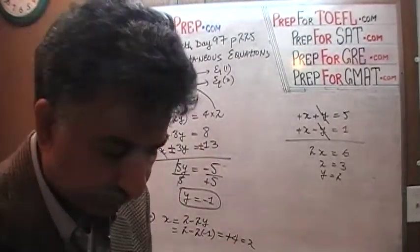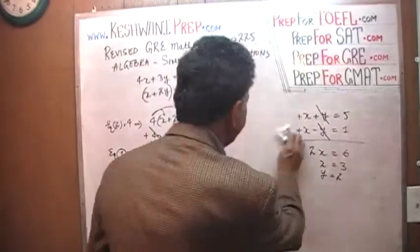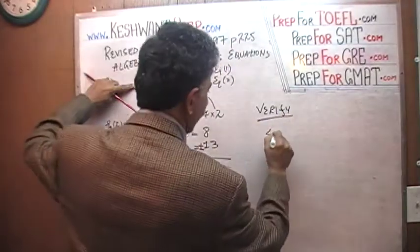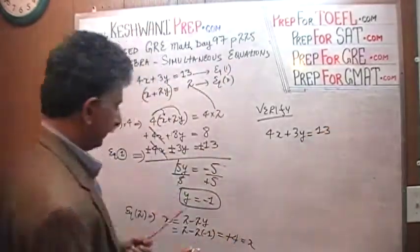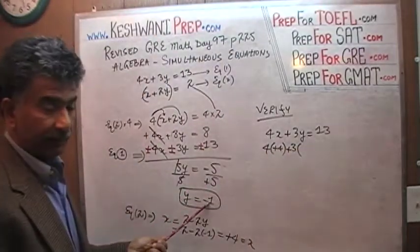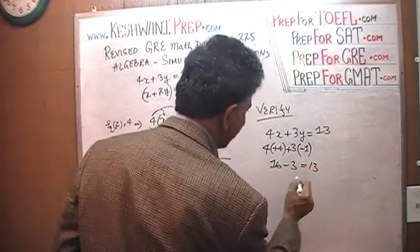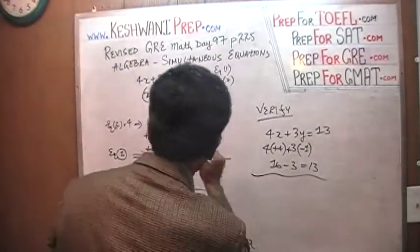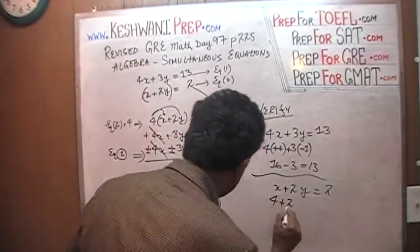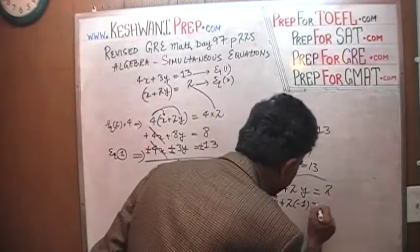Let's put them back in the equations to verify. Our first equation is 4x plus 3y equals 13, and we are claiming x equals positive 4 and y equals negative 1. So 4 times 4 plus 3 times negative 1: 4 times 4 is 16, and 3 times negative 1 is negative 3, and 16 minus 3 is 13. It works! Similarly, the second equation: x plus 2y equals 2. With x equals 4 and y equals negative 1, we get 4 plus 2 times negative 1 equals 4 minus 2, which equals 2. It works.